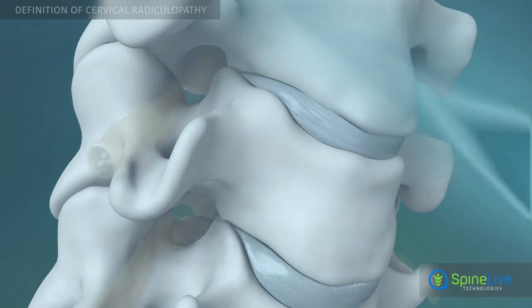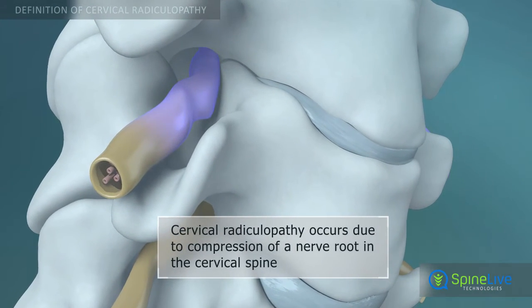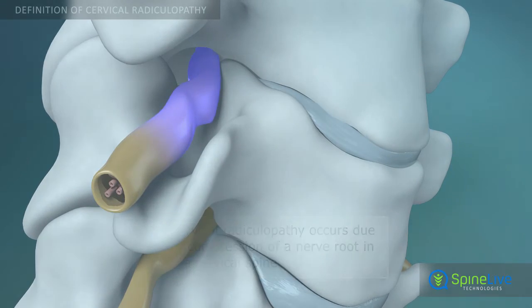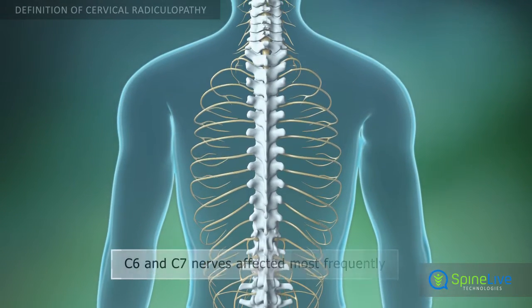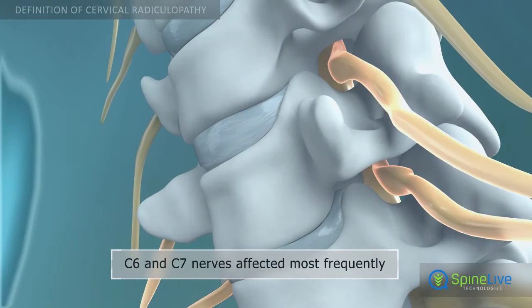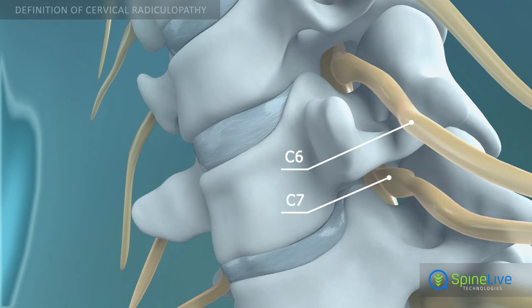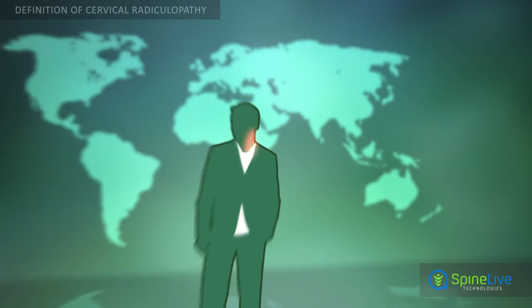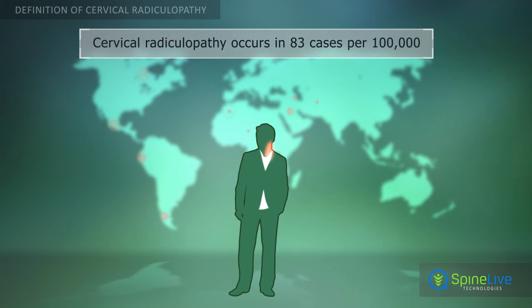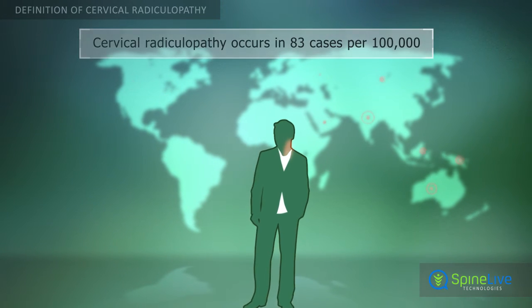Cervical radiculopathy is a condition that occurs when an intervertebral nerve root in the cervical region of the spine is compressed or pinched. Radiculopathy can affect all cervical nerve roots, but most often this pathological process involves C6 and C7 nerves. Cervical radiculopathy is less prevalent than other types of radiculopathies and occurs in 83 cases per 100,000 people of world population.